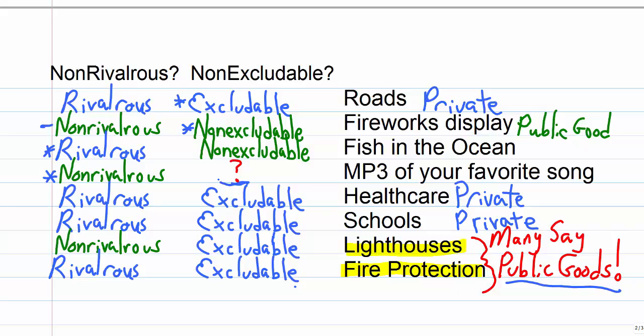Healthcare and schools are private goods. There are private hospitals. There are private schools. They're both rivalrous because you need more doctors or teachers to provide more health care or education and they're both excludable because you could prevent people from getting the services if they didn't pay.